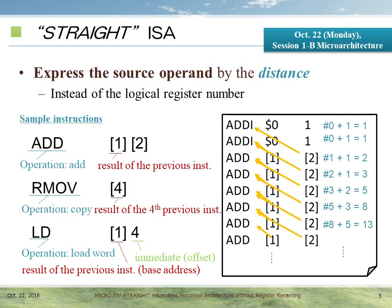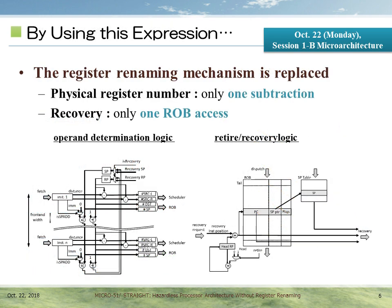Here is our STREIT ISA. The key feature is to express the source operand by the distance from its producer instruction instead of the logical register number. For example, add [1] [2] in this slide means to add the result of the previous instruction to the result of the second previous instruction. By using this expression, physical register numbers can be determined by only one subtraction for each source operand, and misspeculation recovery is completed by only one ROB access.